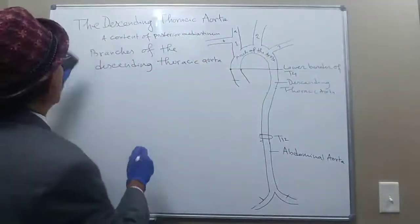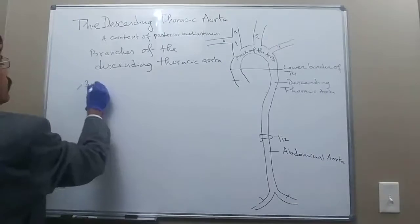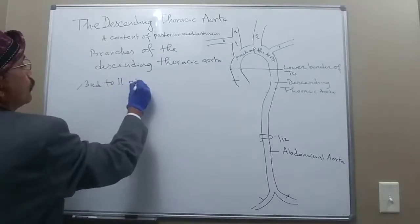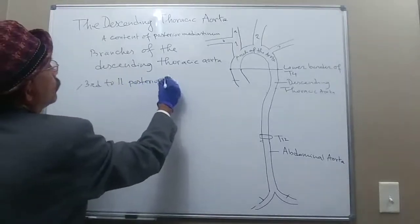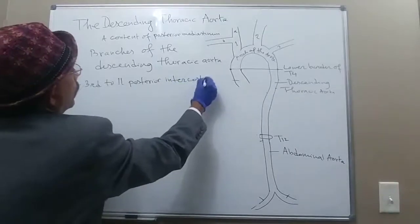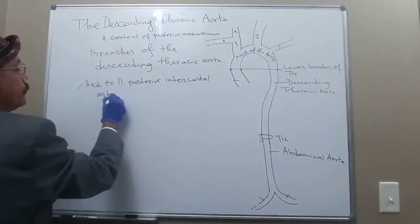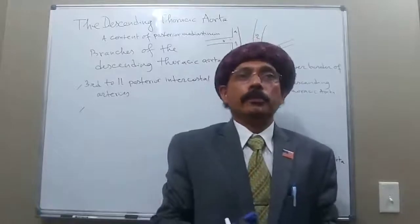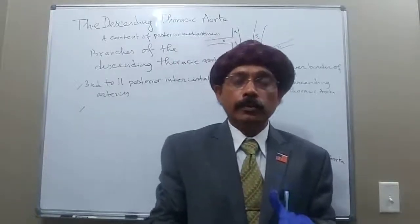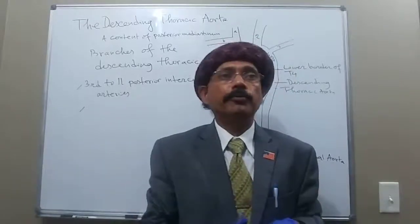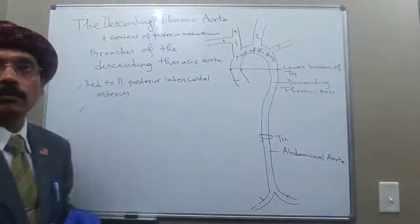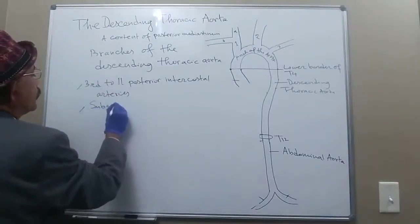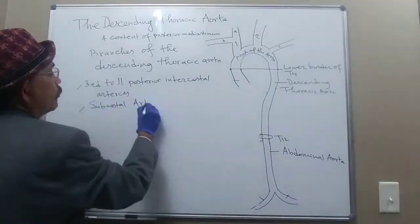So we start with the branches. The 3rd to 11th posterior intercostal arteries arise from the descending thoracic aorta. We also include the subcostal artery, which passes below the 12th rib.